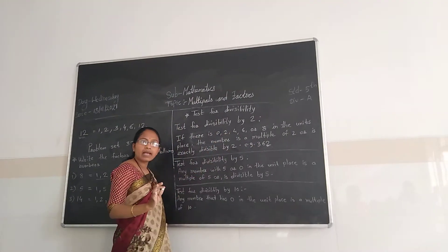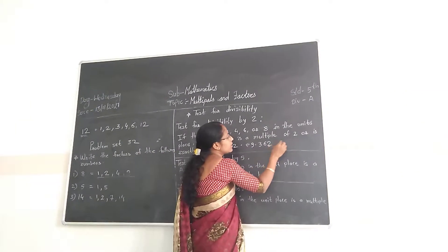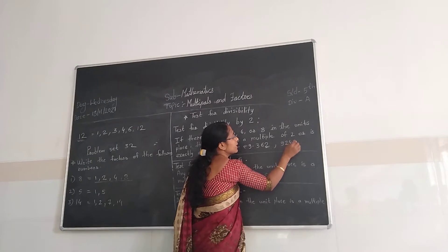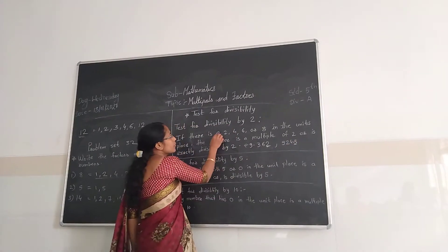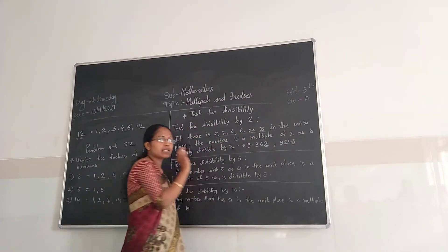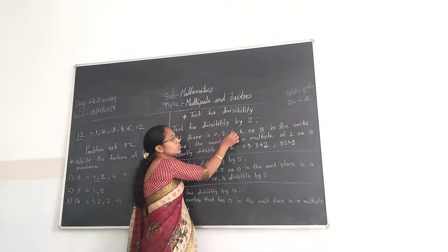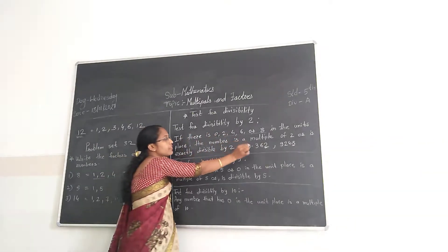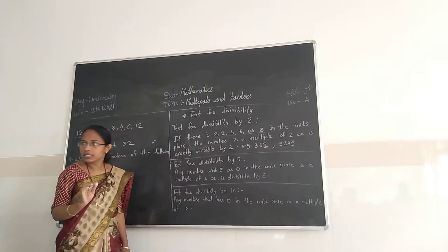And then the number 9248. Just find out if the unit place digit is 0, 2, 4, 6, or 8. Then the number is divisible by 2. Understand?